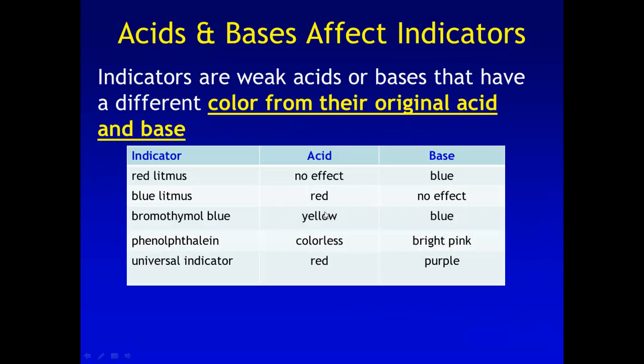Now, indicators are weak acids or bases that have a different color from their original acid or base. We use indicators to help us understand pH and whether or not something's acidic or basic. Now, these two here, the red litmus and the blue litmus, you might want to star those or highlight them in your notes. These two, I am going to ask you to learn. All these other ones on the list, I'm not.